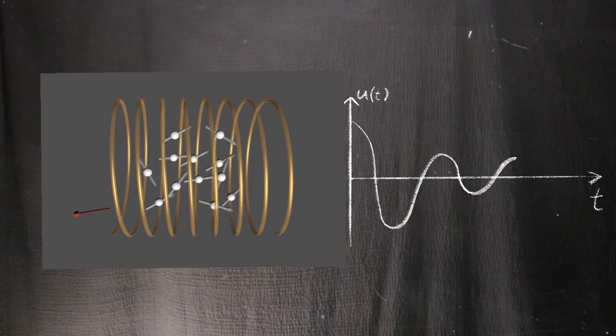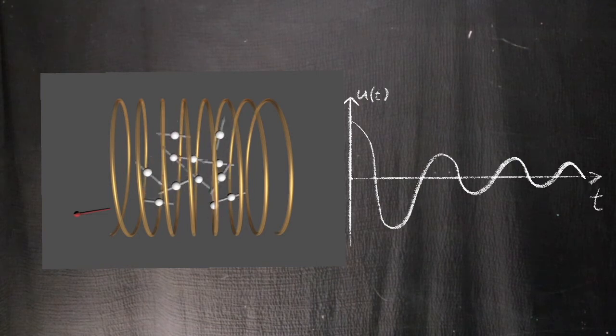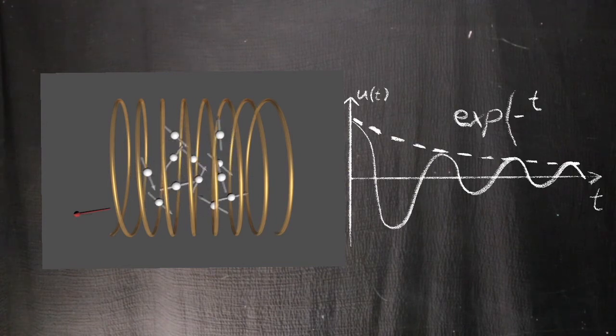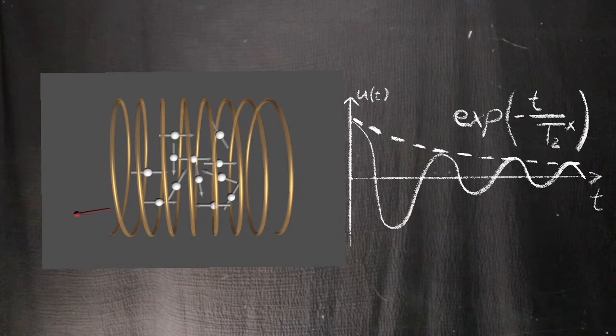Despite our best efforts, spins don't experience the same magnetic field B0, but a small change depending on the design of the magnet and also the nature of the sample itself. This decay is often exponential with a decay constant T2 star.